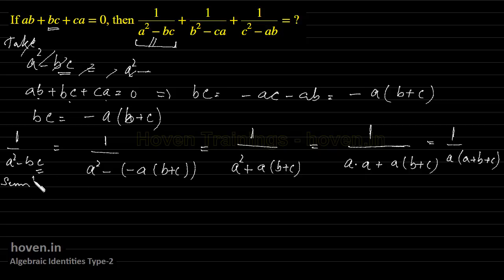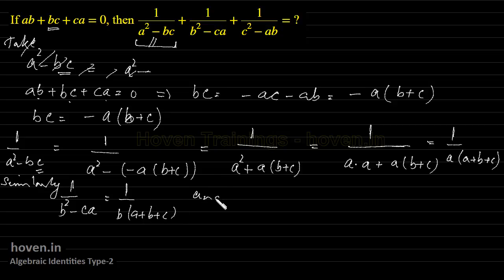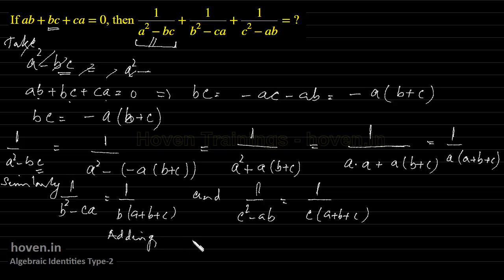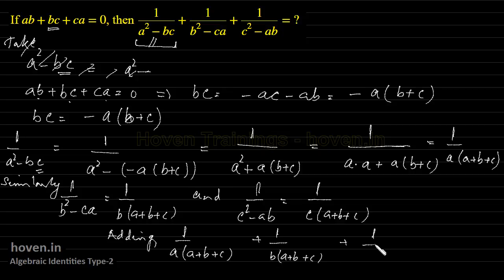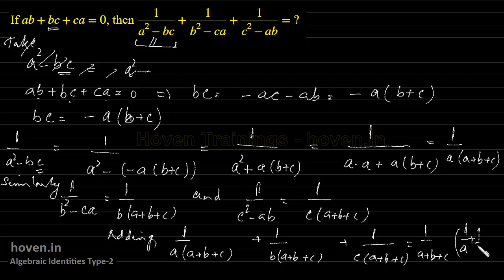Similarly, 1 by b squared minus ca will be equal to 1 by b into a plus b plus c, and 1 by c squared minus ab will be equal to 1 by c into a plus b plus c. Adding all three, we get 1 by a into a plus b plus c, plus 1 by b into a plus b plus c, plus 1 by c into a plus b plus c.